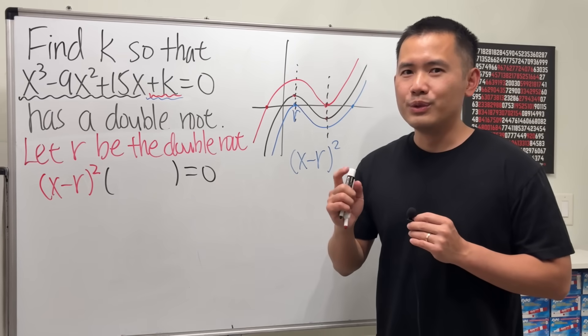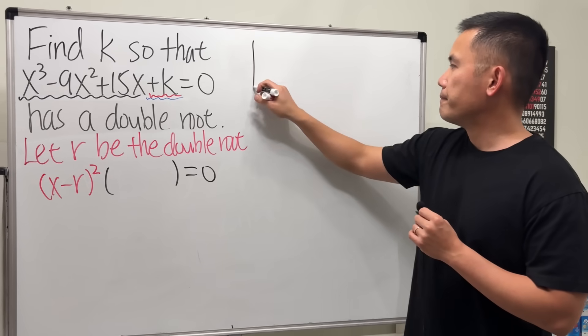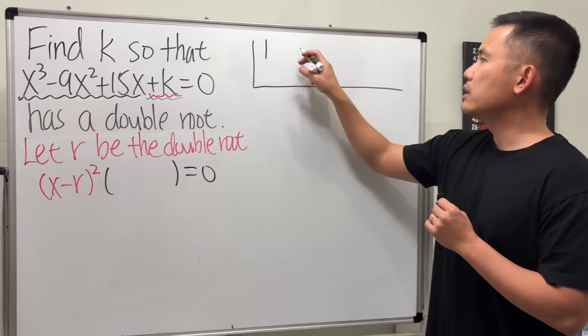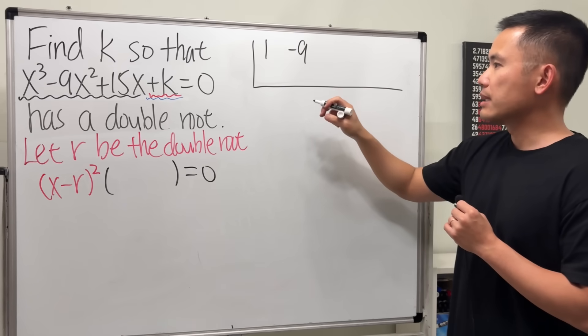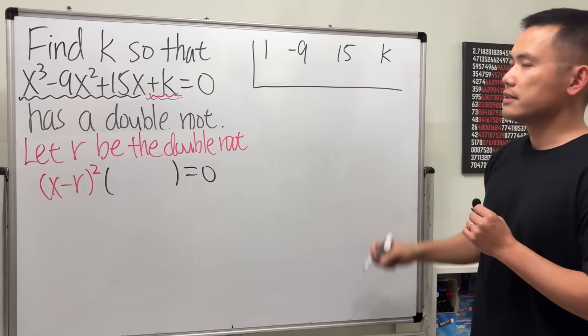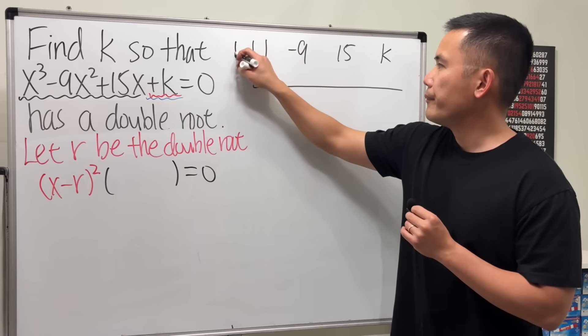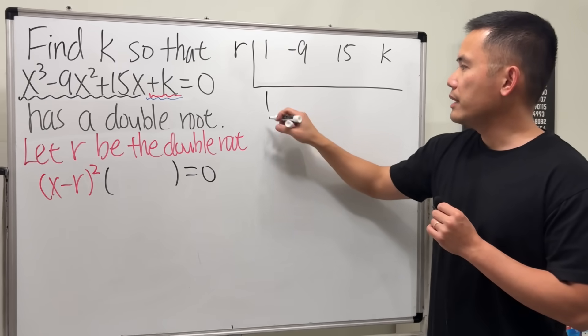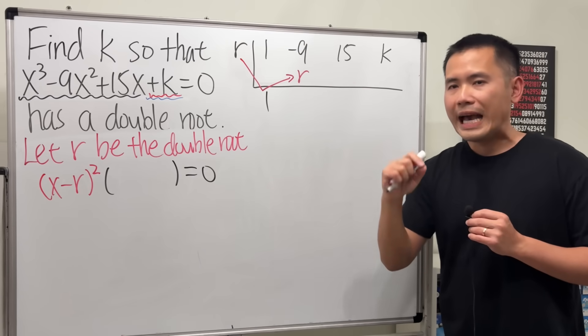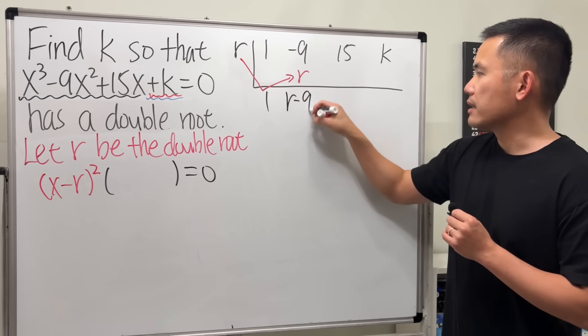So what I'm going to do is I'm going to let r be the double root, and our goal is to rewrite this polynomial into the form of (x - r)² times something else. To do so, the best way of course is to use synthetic division. So let's go ahead and do it right here. Let's write down the coefficients: we have 1x³, -9x², 15x for the first power, and then k is just a constant term.